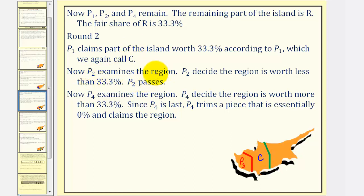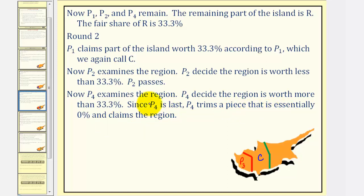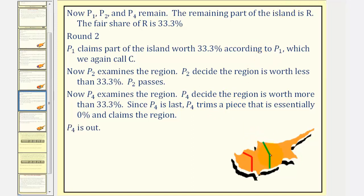Player two examines the region, decides it is worth less than thirty-three point three percent, and passes. It goes to player four. Note there is an advantage to being last in the last diminisher method. Player four decides the region is worth more than thirty-three point three percent, and since player four is last, player four trims a piece that is essentially zero percent and claims the region. It may look something like this — just a very minor trim.